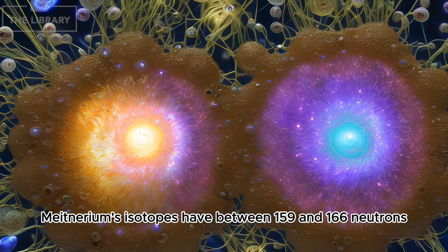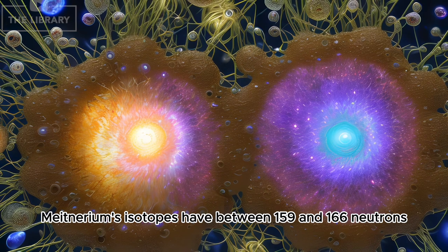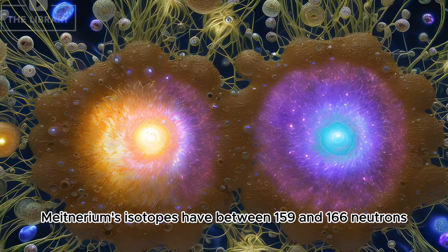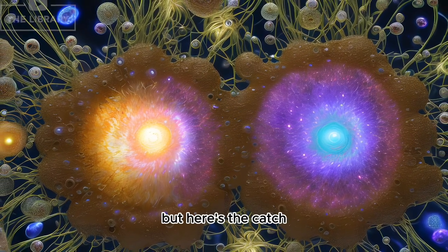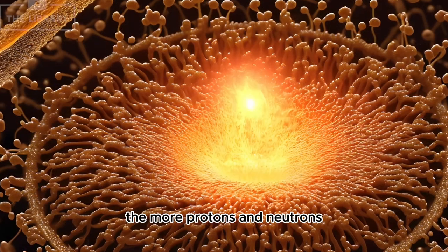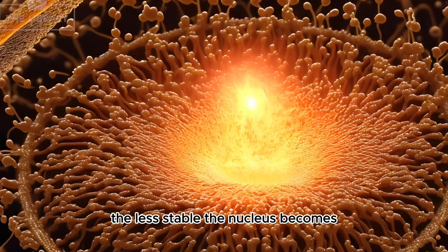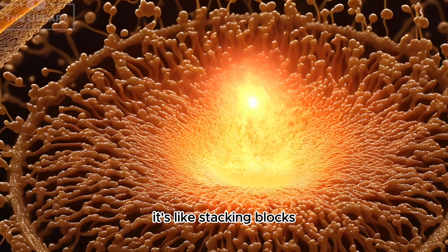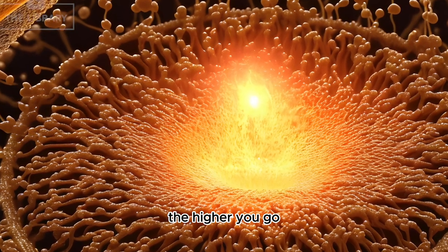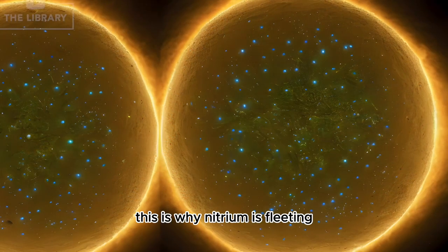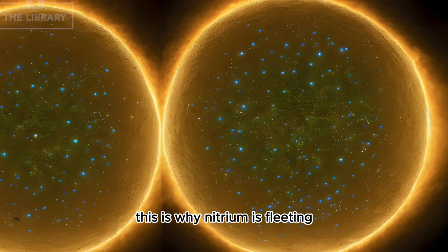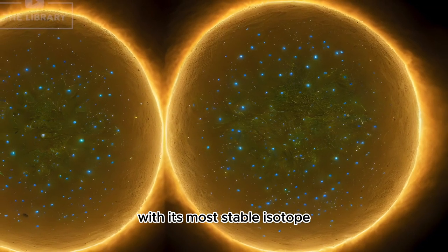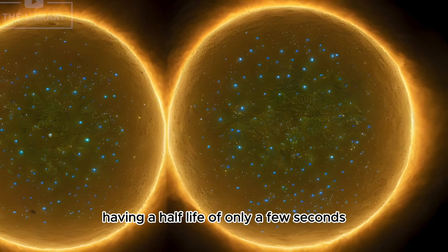Mitnerium's isotopes have between 159 and 166 neutrons. But here's the catch, the more protons and neutrons, the less stable the nucleus becomes. It's like stacking blocks, the higher you go, the more unstable it gets. This is why Mitnerium is fleeting, with its most stable isotope having a half-life of only a few seconds.